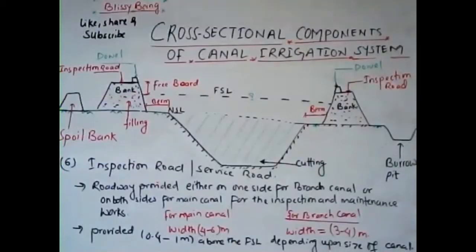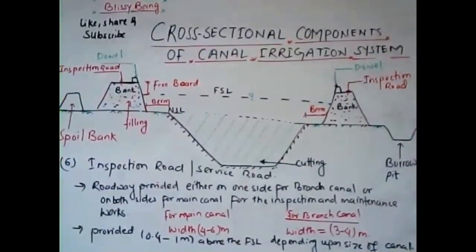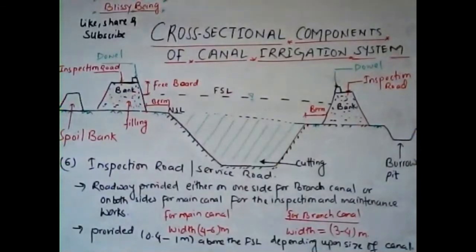The sixth cross-sectional component is the inspection road, also known as the service road. It is the roadway provided either on one side for a branch canal or on both sides for the main canal, mainly used for maintenance and inspection of the canal system. For the main canal, the width of this inspection road varies from 4 to 6 meters, and for the branch canal the width varies from 3 to 4 meters.